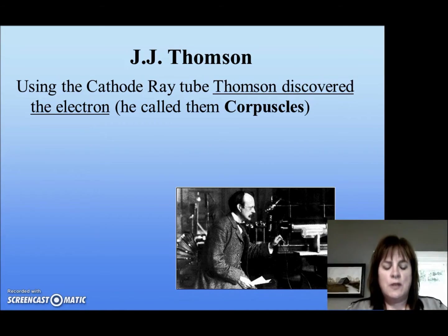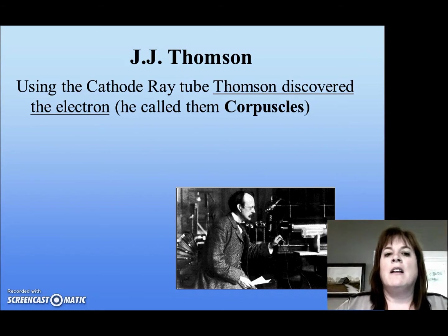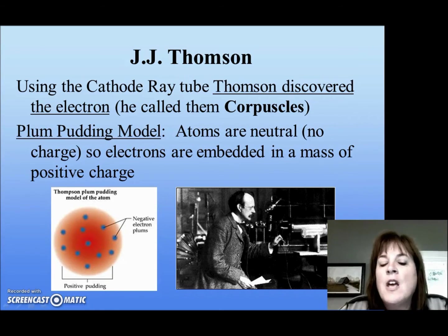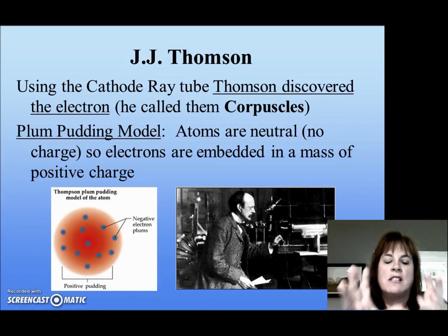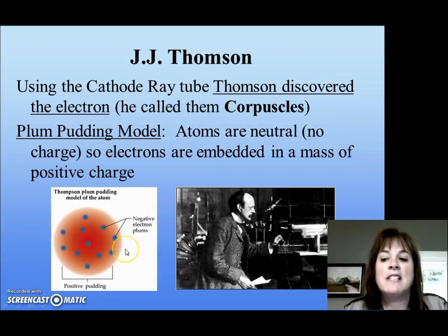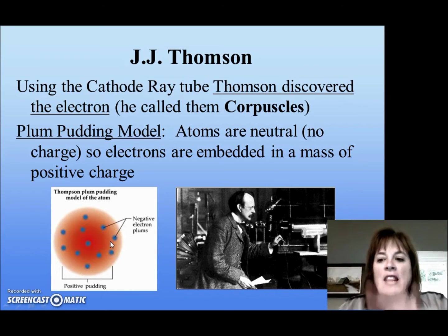Now, what he knew is that atoms were neutral. So if we have this negatively charged particle, what's up with it? He came up with his model of the atom, which is called the plum pudding model. What the plum pudding model is, is that we've got this mass of positively charged pudding, and in our positively charged pudding we have our negative electron plums, evenly distributed through the pudding.